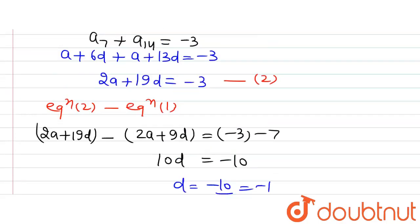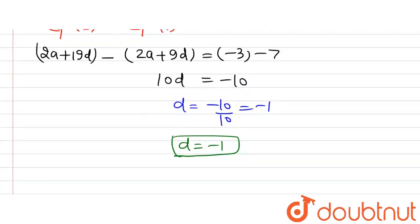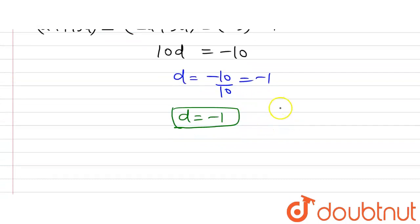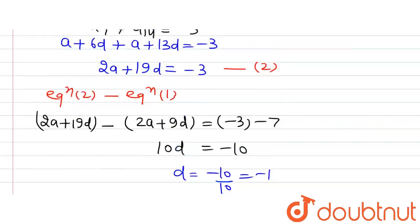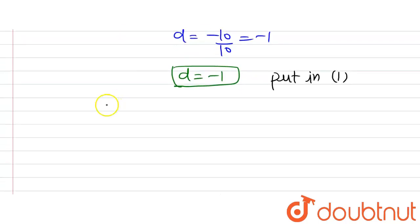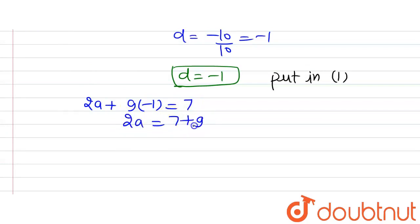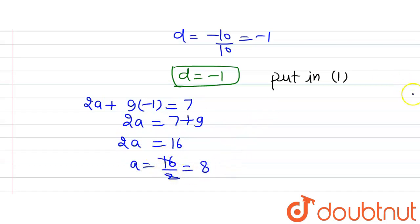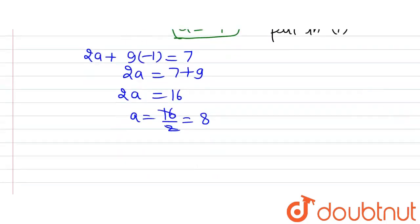Now let's substitute D = minus 1 into equation 1. We have 2A + 9D = 7, so 2A + 9(minus 1) = 7, which gives 2A = 7 + 9 = 16, so A = 8. The first term A is equal to 8.